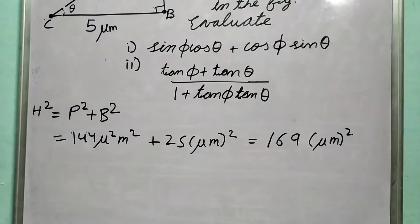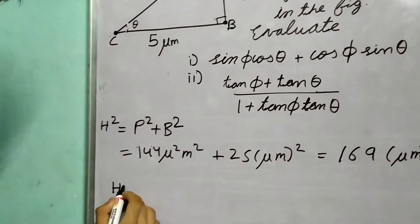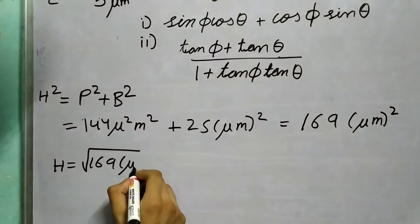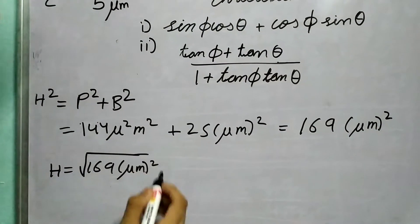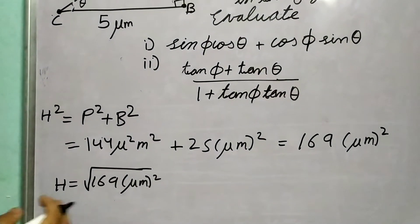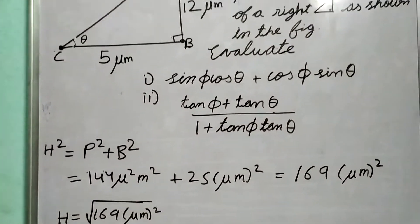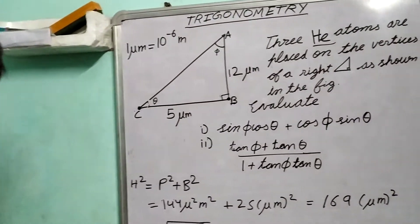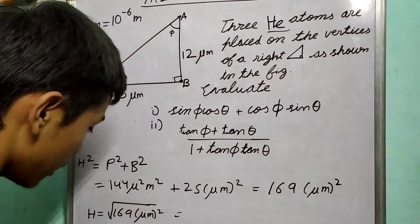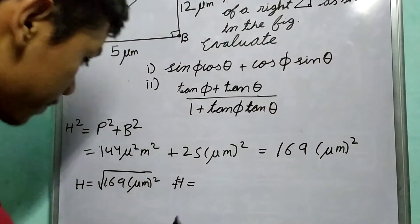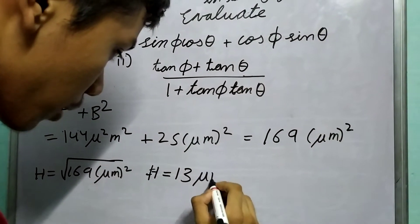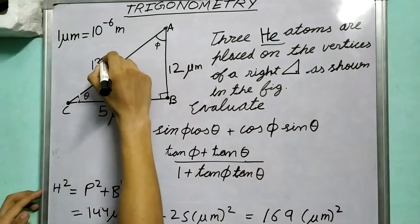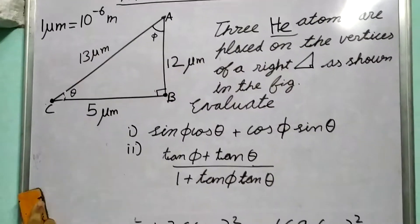We take the positive root of 169 micrometer squared, since distances cannot be negative. The square root of 169 is 13, so the hypotenuse is 13 micrometers.